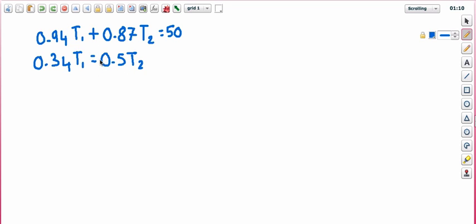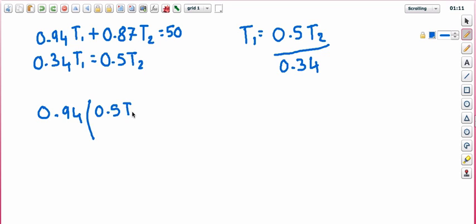So I'm going to say T1 is 0.5 T2 divided by 0.34. And I'm going to plug T1 into that one. So we've got 0.94 bracket 0.5 T2 over 0.34 plus 0.87 T2 equals 50.